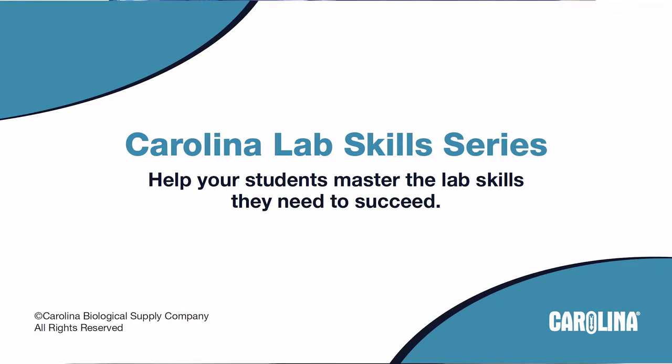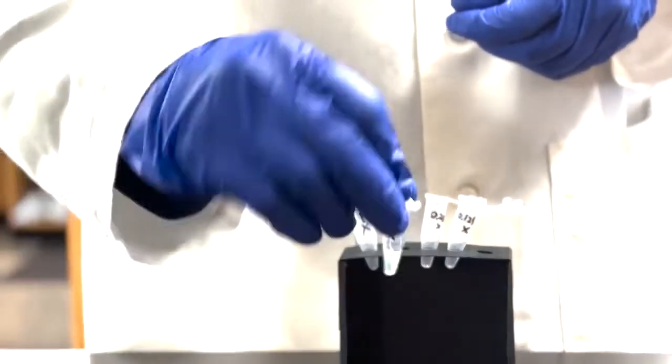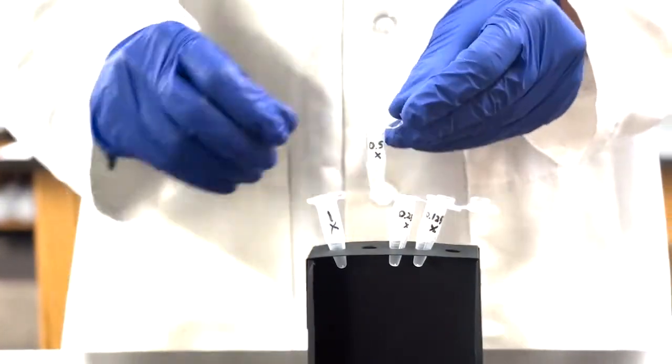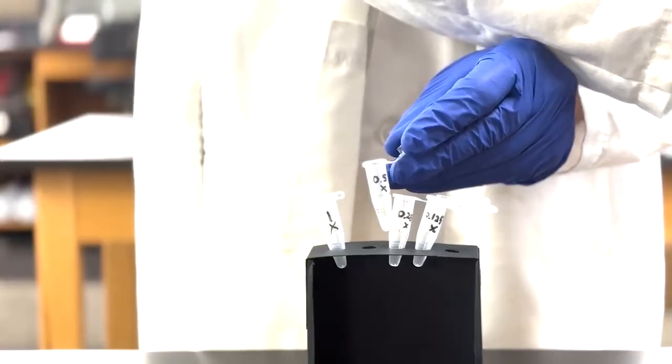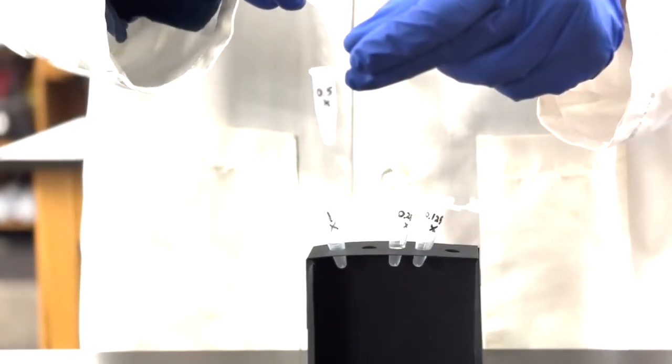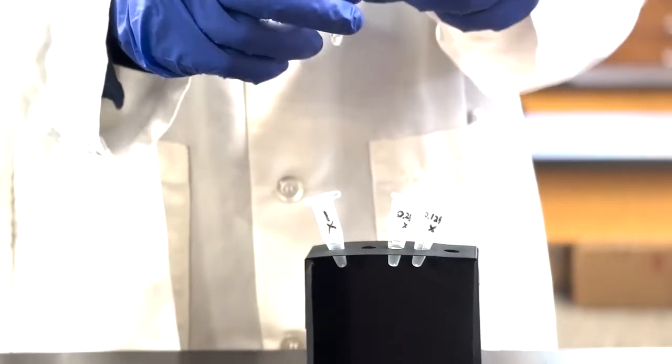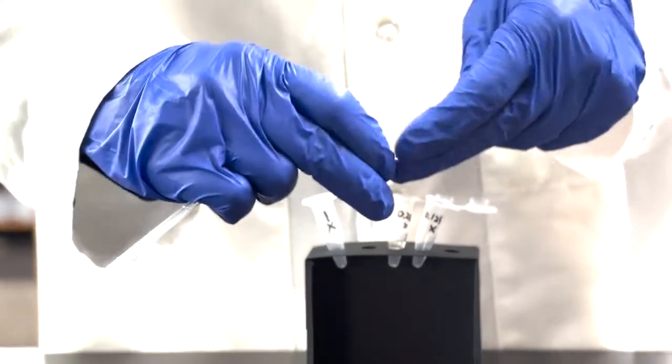A serial dilution is a laboratory technique used to create a series of solutions from an initial stock solution. Typically a constant dilution factor is used, resulting in a geometric decrease in concentration. This process involves repeatedly diluting the solutions in series to achieve the desired concentrations for experimentation or analysis.